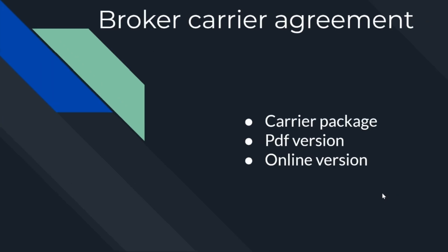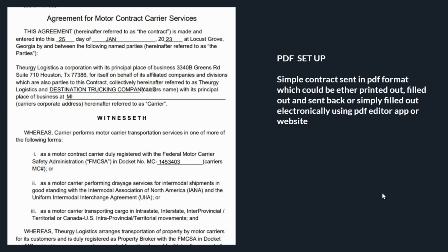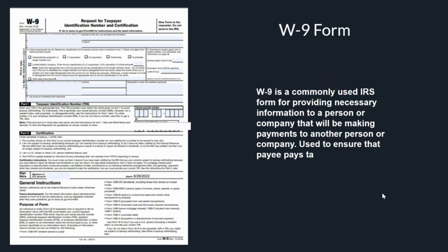Let's look at the broker-carrier agreement. Basically, there are two types of agreements that we can sign with brokers. The first and most common is the PDF one — that's where you're going to have a PDF file sent by the broker to you. You'll have to open one of the programs we use to edit it and put in the information about the carrier, which you can find in the previous documents we already talked about, like the carrier packet.